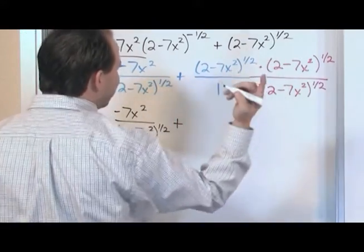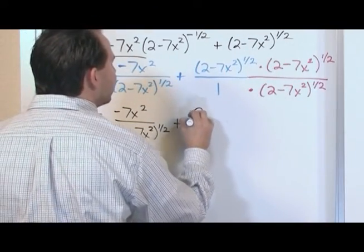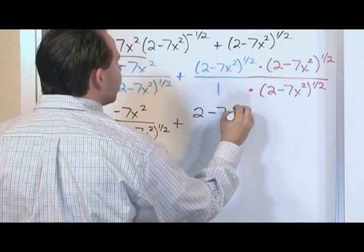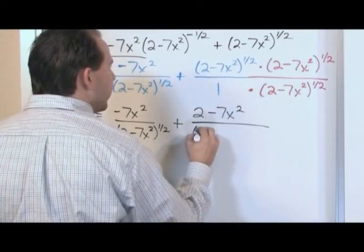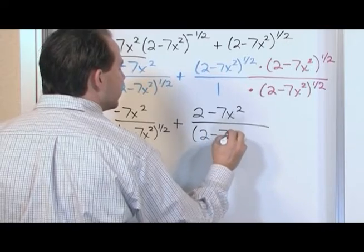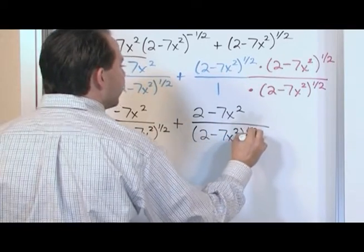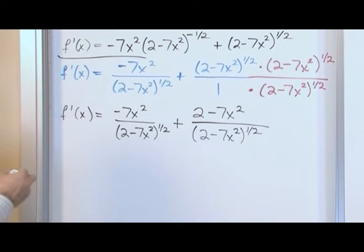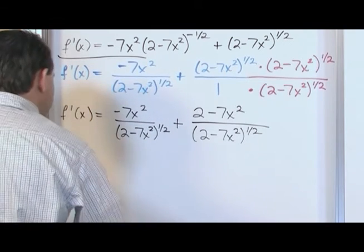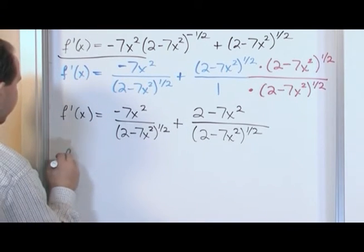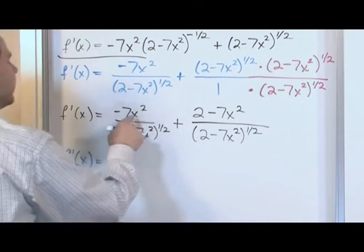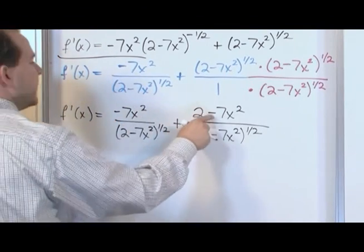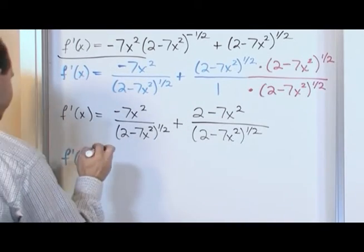So all you'll have on top is (2 minus 7x squared). And on the bottom, 1 times this is going to give us what we've wanted to get: (2 minus 7x squared) raised to the power of 1/2. So we have a common denominator, which is the only reason we did that. So let's go ahead and add these two fractions. f prime of x. Notice that when we add this to this, we have 7x squared and negative 7x squared.